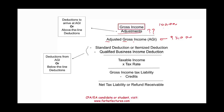So we said income $100,000, adjustments of $5,000 — this is an important number in tax because a lot of deductions and phase-outs are based on AGI. Any deduction above AGI is called an above-the-line deduction to arrive at AGI. Now, after you get to AGI, you have two options: you can either deduct your standard deduction or your itemized deduction.